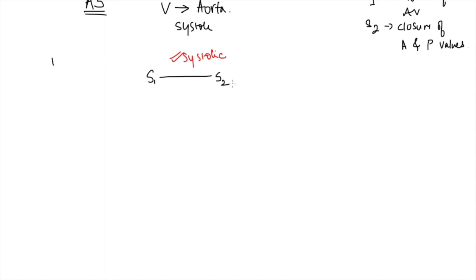The murmur of AS is a crescendo-decrescendo pattern. As the ventricle contracts, at some point during ventricular systole the contraction is maximum - maximum blood is being pushed across the valve, turbulence is highest, and the murmur intensity is highest. The obstruction is maximum at that midpoint, hence the crescendo-decrescendo pattern.